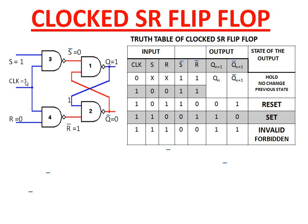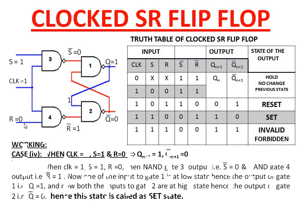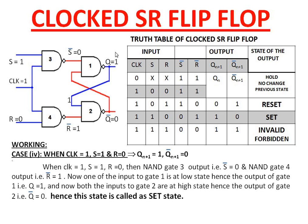Case 4: When clock is applied, S equals 1, and R equals zero. One of the inputs to gate 4 is at low state, hence its output will be high. Both inputs to gate 3 are at high state, hence its output is at low state. That means gate 1 has a low input and gate 2 has a high input. Gate 1 output is forced to be at high state, and this is fed back so that both inputs to gate 2 are high, causing gate 2 to produce a low output. Since the normal output Q is high, this state is called the set state.